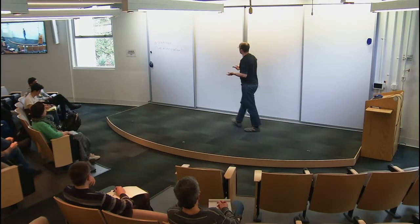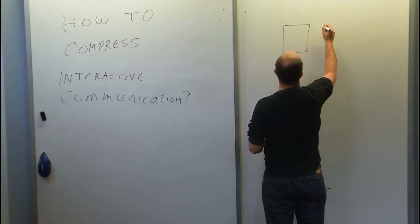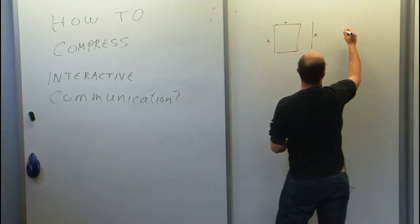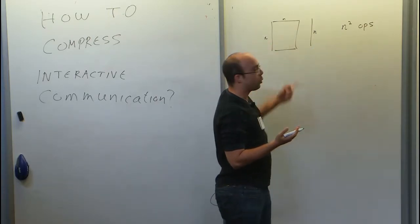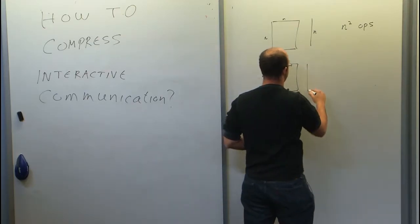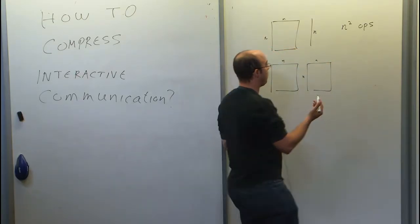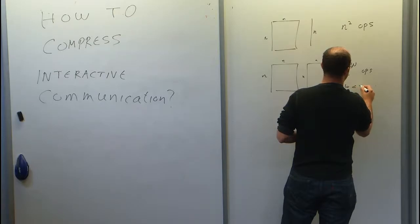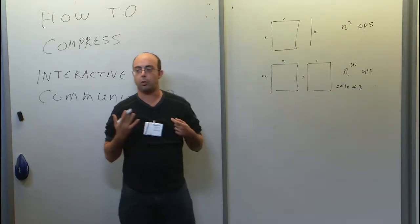The best example is matrix multiplication. If you want to multiply an n×n matrix by a vector, it requires n-squared operations just to read the matrix. But if you want to multiply two n×n matrices, the naive approach takes n-cubed time. We know there are better ways — we can do it in n^ω operations where ω is between 2 and 3.